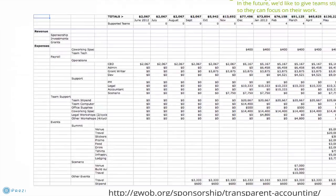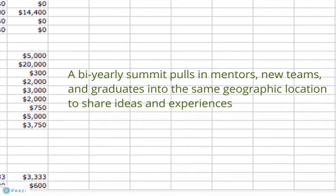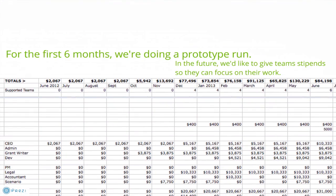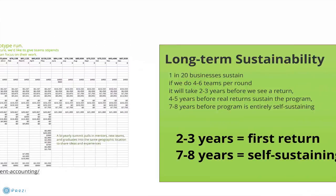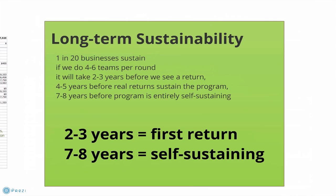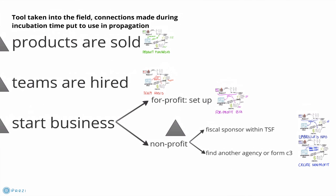Contributions go towards minimal support staff, a bi-yearly summit, and team stipends. For Geeks Without Bounds to be successful as an organization itself, we take a small percentage of each of these sorts of transactions — a finder's fee, equity, or a percentage of incoming grants and donations.